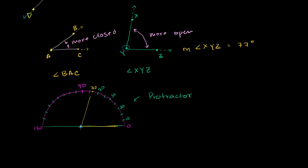I'll put A at the center, and then AC along the zero degree edge of this protractor. Then I'll point AB in the appropriate direction — normally instead of moving the angle, you'd move the protractor to the angle. It looks something like that, and you can see it's pointing to right about the 30 degree mark. So the measure of angle BAC is equal to 30 degrees. You can see that 77 degrees is clearly larger than 30 degrees, so it is a larger angle — which makes sense because it is a more open angle.